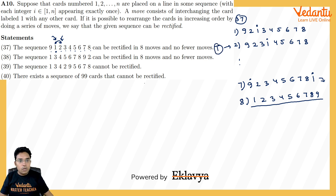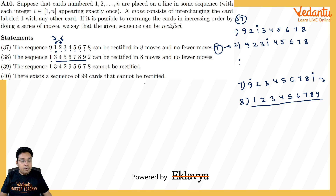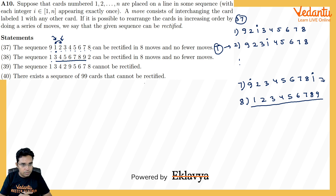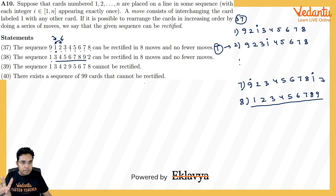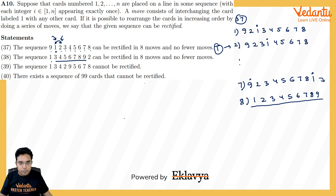Part 38: the sequence 1,3,4,5,6,7,8,9,2 — can it be rectified in 8 moves? Here 1 is already in its correct position, but all other numbers are displaced. To move any number to its correct place, card 1 must first be displaced, then returned. This requires extra moves. With 8 numbers out of place and the constraint on how card 1 moves, it appears 8 moves may not suffice for this sequence.